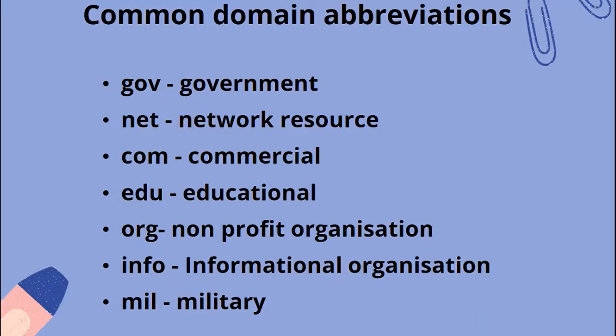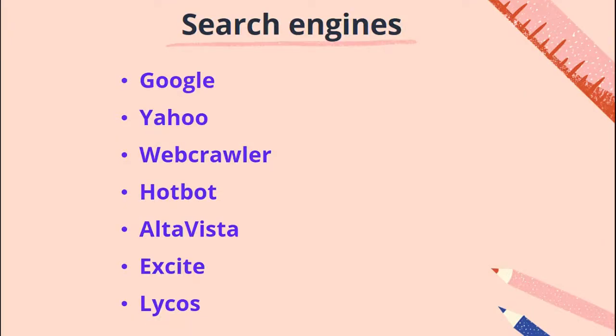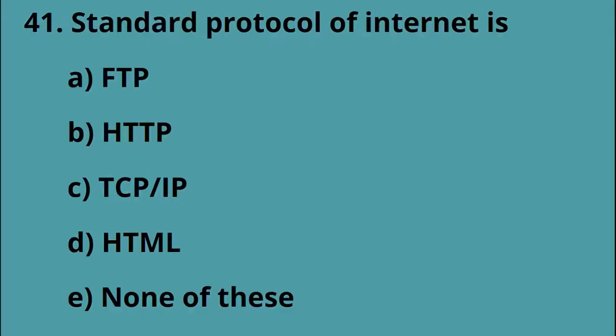A domain abbreviation is called a combinator. Search engines are popular and commonly used. The standard protocol of the internet is TCP/IP.